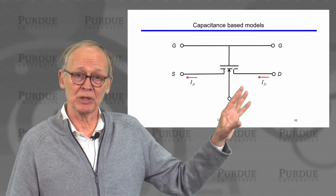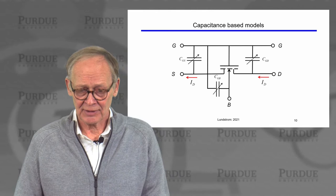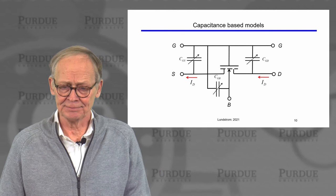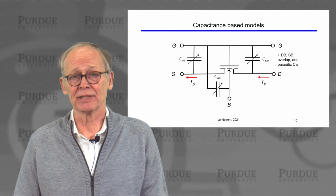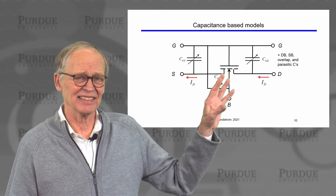Since we're switching these transistors, we may have a DC model — voltages applied, DC currents from drain to source — and also transient currents. We can account for transient currents by introducing capacitances: there's an intrinsic capacitance between the gate and source, between the gate and bulk or body, and between the gate and drain — all voltage-dependent capacitors. There are also capacitances between the drain and body, the source and body, overlap capacitances between the gate and drain and gate and source, and various other parasitic capacitances.